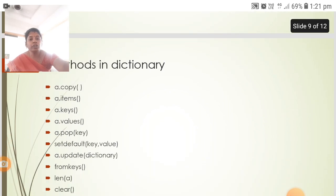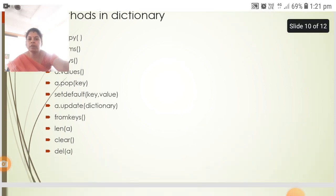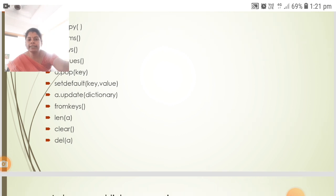Methods in dictionary include copy, items, keys, values, pop, set default, update, from keys, length, clear, and delete.